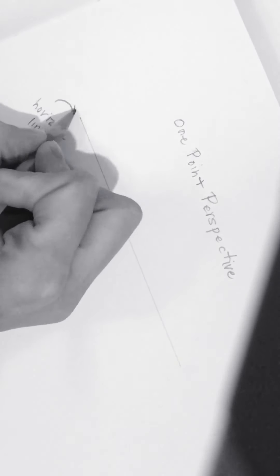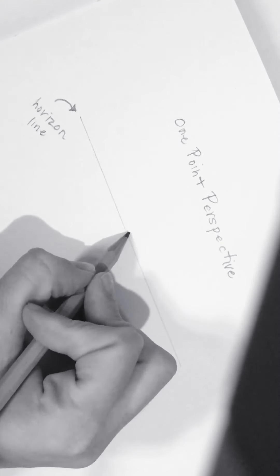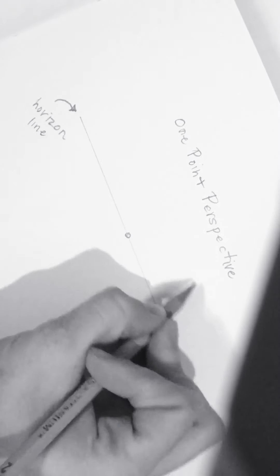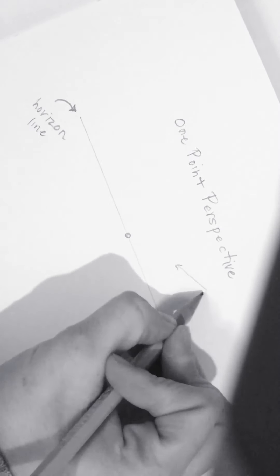Somewhere along that horizon line, you will need to have what's known as a vanishing point. So here, I'm going to write horizon line. And I'm going to do my vanishing point here.